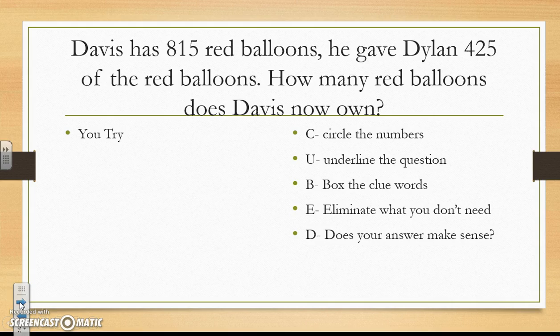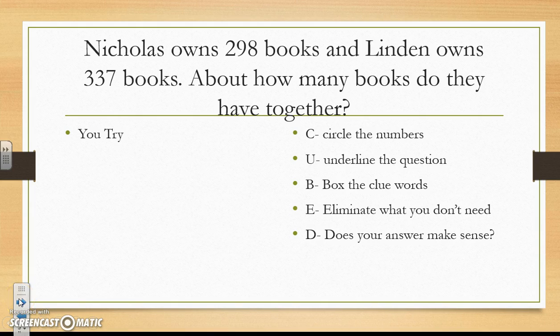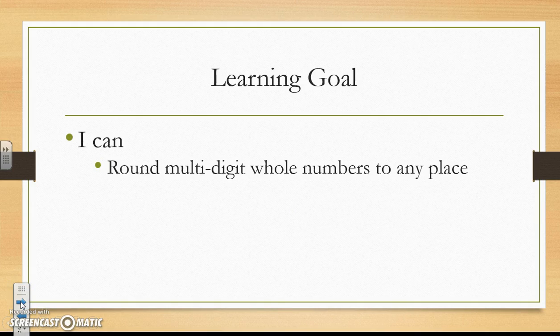Now you try this one. Davis has 815 red balloons and he gave Dylan 425 of the red balloons. How many red balloons does Davis have now? Remember to use the CUBE strategy when you practice this. And remember our learning goal: I can round multi-digit whole numbers to any place. Now that you are done with this lesson, think about where you are in this learning goal. Thank you for your hard work, and I will see you tomorrow.